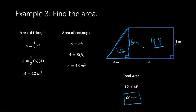If you see a complex shape, you can always break it apart into smaller shapes whose areas you know how to find, and then add those areas up separately. That's the strategy used in example 3.